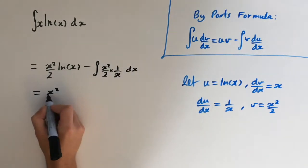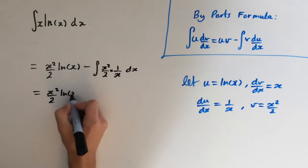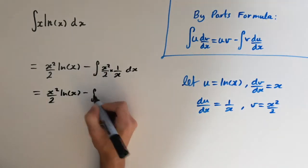So this equals x squared over 2 ln of x minus the integral of x over 2 dx.